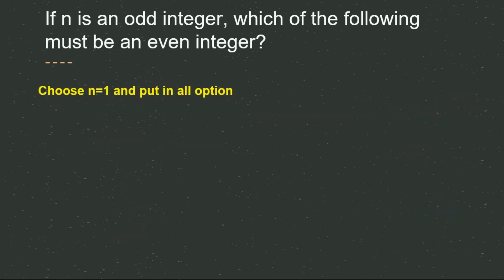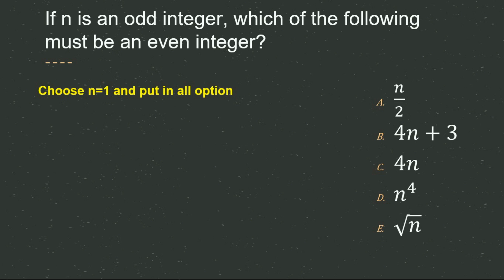The next question: if n is an odd integer, which of the following must be an even integer? This is the easiest question in the video. Put n = 1 into all the options. Option A, n/2, gives 0.5 — not even. Option B gives 7 — not even. Option C gives 4, which is an even integer. So C is the correct answer.